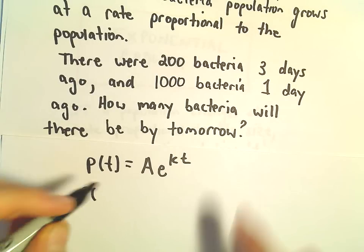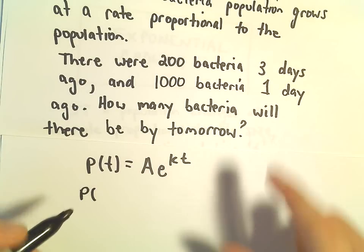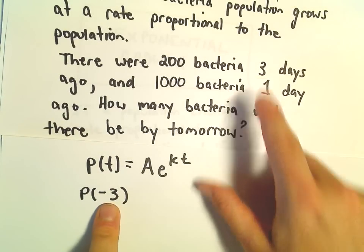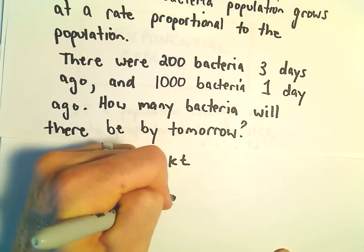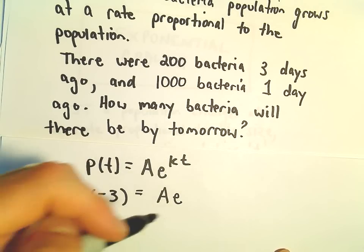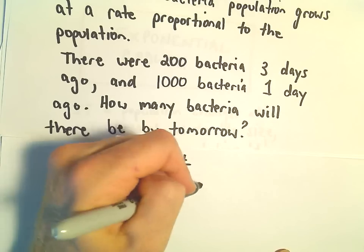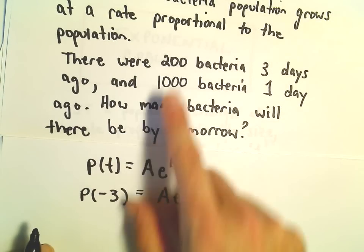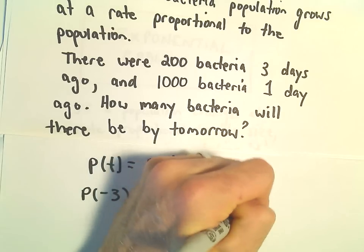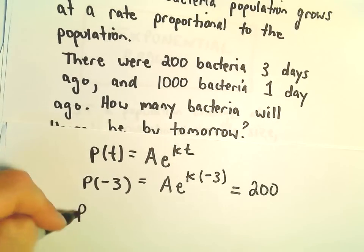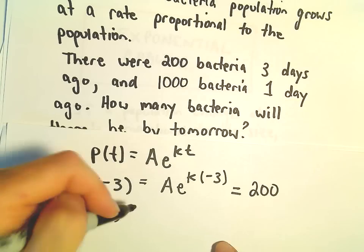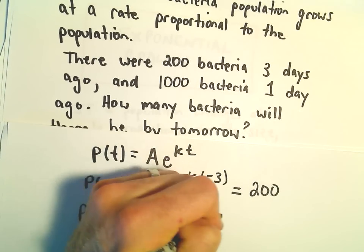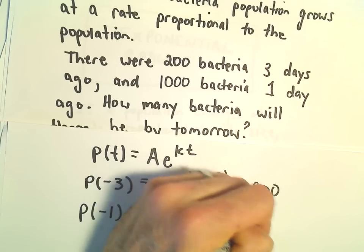What we do know is that three days before now, I'm going to let T equal negative 3 to represent three days prior. We can plug in negative 3, and we know the population three days ago was equal to 200. Likewise, we know the population one day before — A times E to the K times negative 1 — equals 1,000.